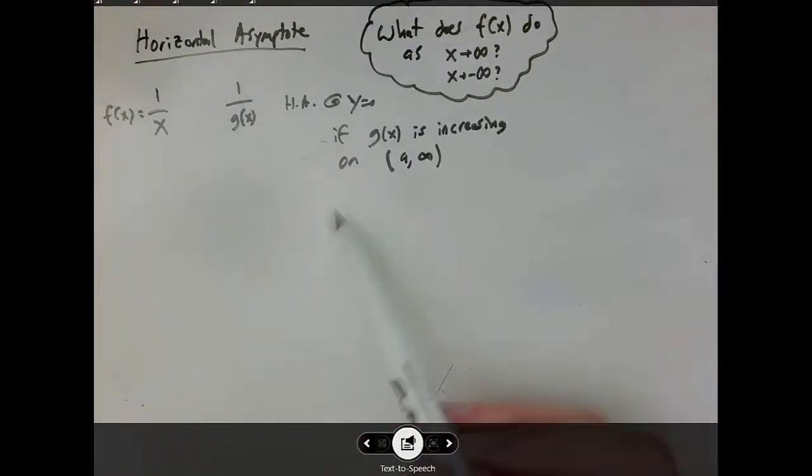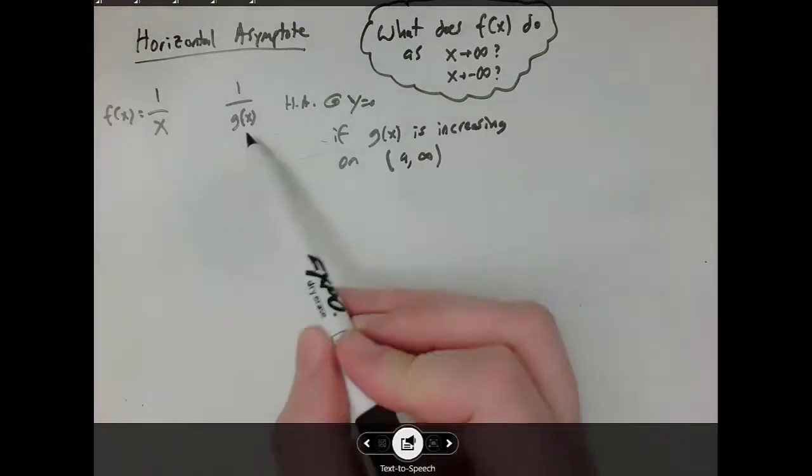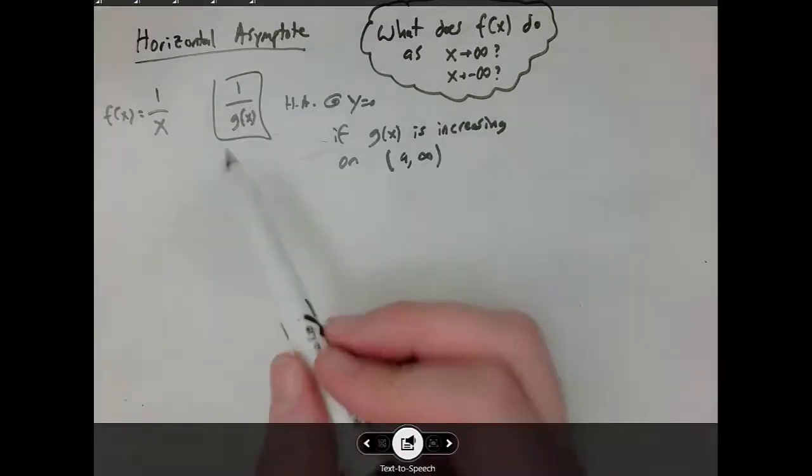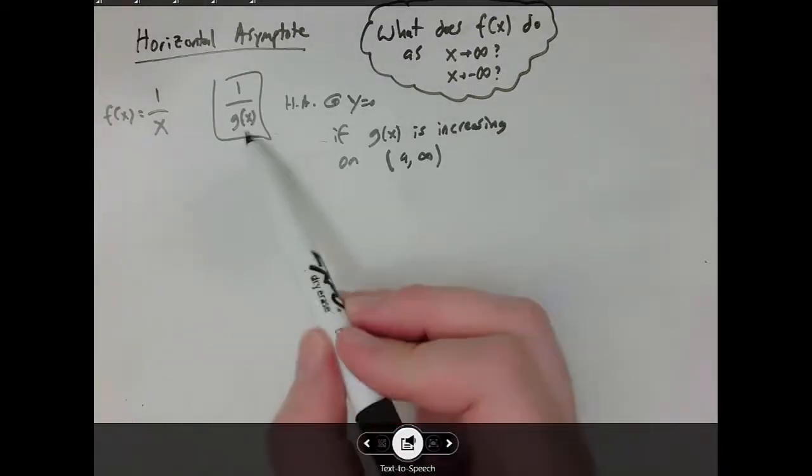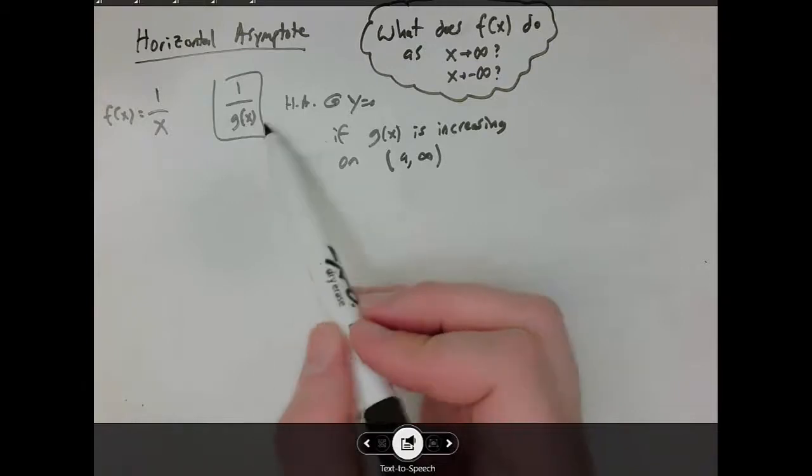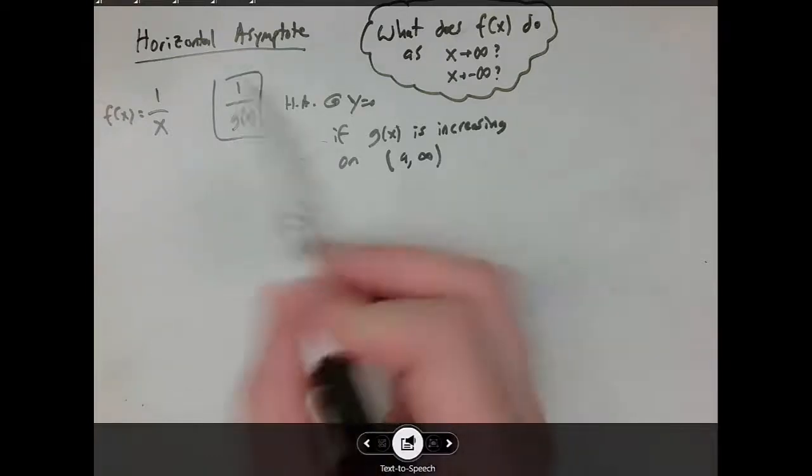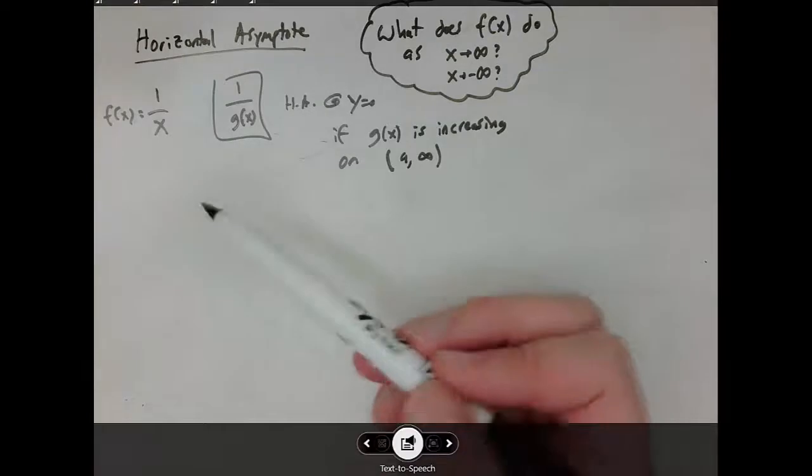If g of x is an increasing function on some interval that goes from some particular number to infinity. So all that means is, let's imagine we could have any function here at all, and the only thing that's required in order for this fraction to be approaching zero when x gets larger, is if g is getting larger as x gets larger. Because if g is always increasing, that means the denominator is always getting bigger, which means this entire fraction is always getting smaller towards zero.